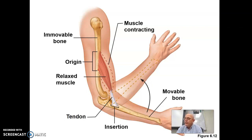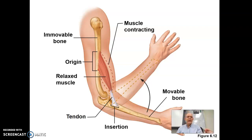Number 19 — matching the terms: immobilizes the origin of a prime mover would be a fixator. Postural muscles, which kind of keep you in place, would be mostly fixators — they hold things still to maintain good posture. Stabilizes joints so the prime mover can act at more distal joints is a synergist — for example, synergists keep the rest of your arm still while you write with your hand. Performs the same movement as a prime mover and helps it out is also a synergist. Reverses or opposes the action would be an antagonist. The only term not used as an answer is prime mover itself, which is the primary muscle responsible for a movement.